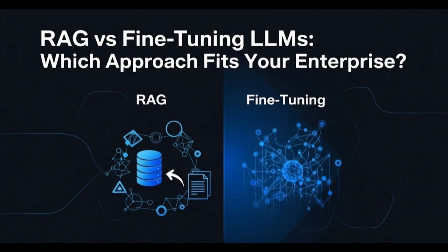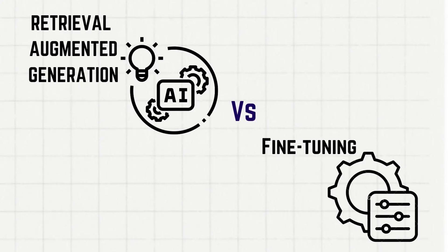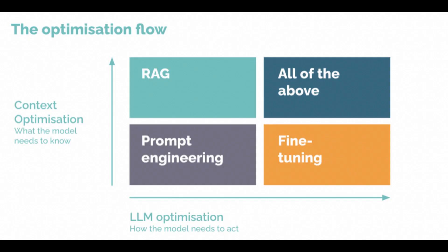Why this matters: whether you're building a legal research tool, a customer support chatbot, or an internal knowledge system, this decision fundamentally changes your architecture, costs, and maintenance burden. Honestly, most people get it wrong on their first try. So let's fix that. By the end of this video, you'll know exactly which approach fits your use case and why.